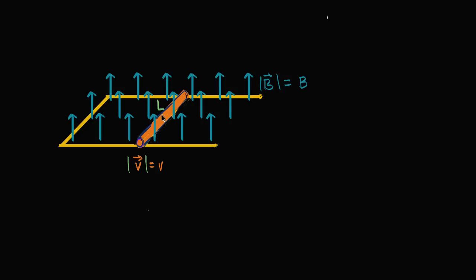Given that, you can see that we're going to have a change in magnetic flux. Why? Well, if this thing is moving to the right with speed v — meters per second or whatever it is — even though the magnetic field itself is constant, you're actually going to be changing the area contained by this loop. And so that is going to give us a change in flux.